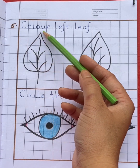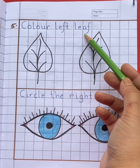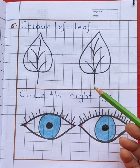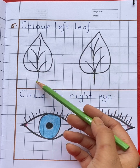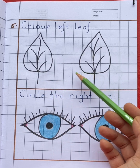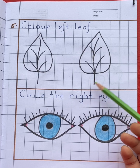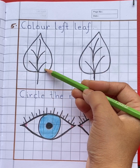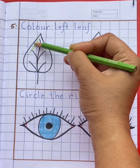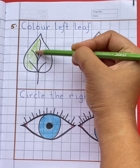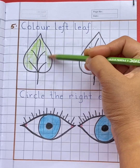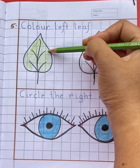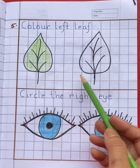Fifth question is: Color the left leaf. Now look here. Here you can see two leaves. Now tell me children, which leaf is on the left side — 1st leaf or 2nd leaf? Yes, 1st leaf. 1st leaf is on the left side. So color the 1st leaf with green color. Left, right.